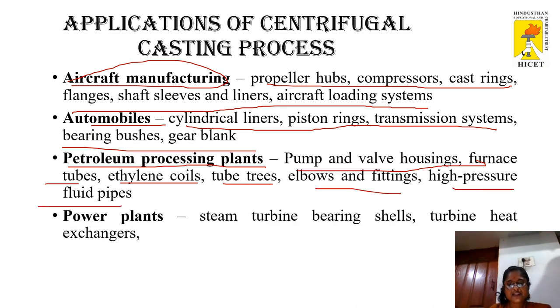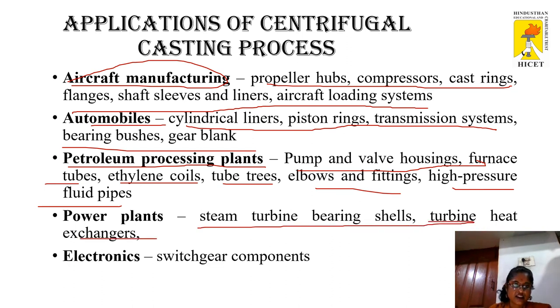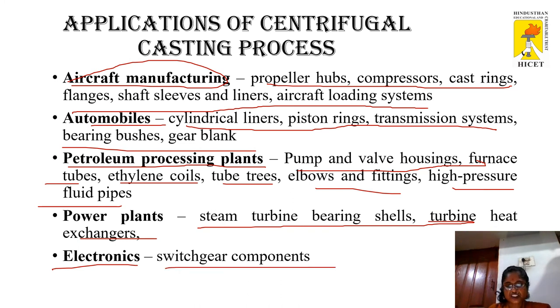In power plants, steam turbine bearing shells and turbine heat exchangers can be cast. In electronics, switch gear components can be produced. That is all for today's presentation — thanks for listening.